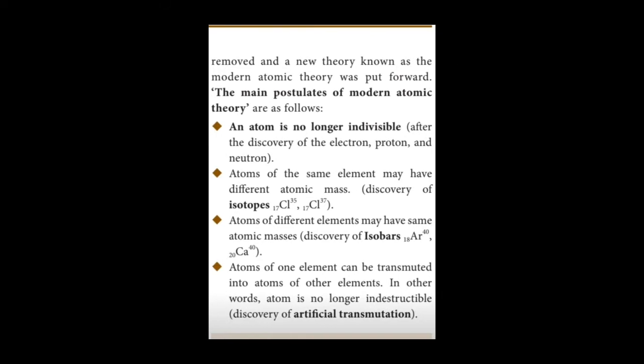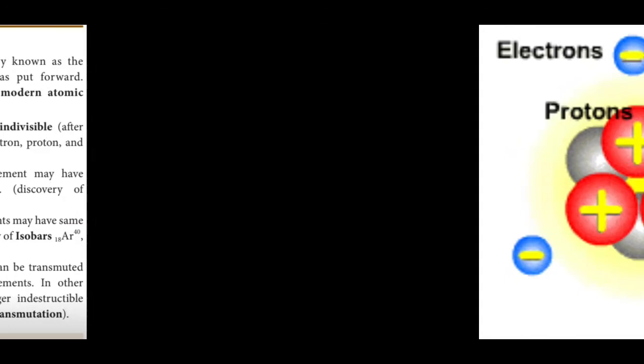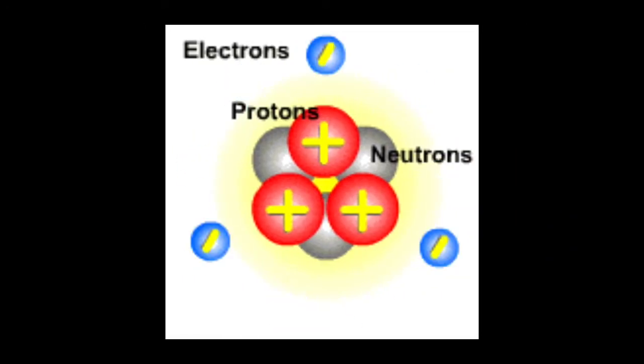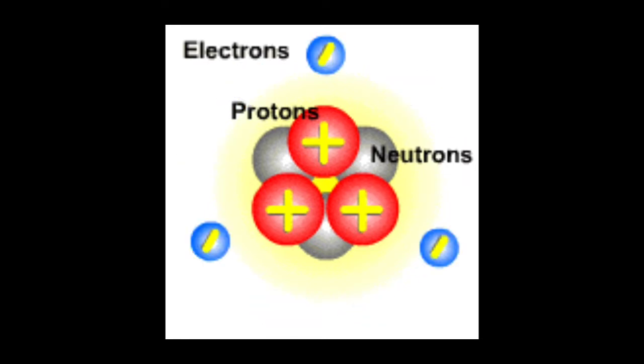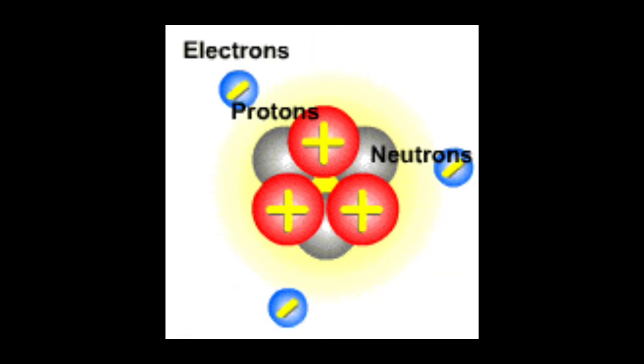The first postulate is an atom is no longer indivisible. What is the meaning of no longer indivisible? It means it is divisible. It can be divided into three subatomic particles: protons, neutrons and electrons.